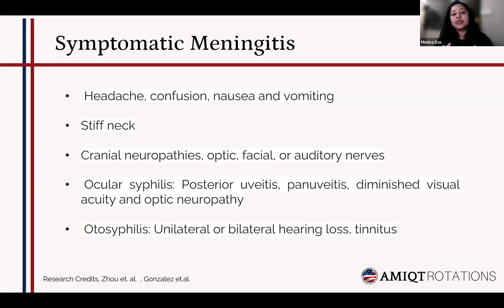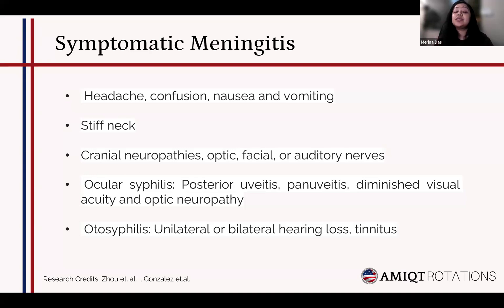Many HIV patients have presented with ocular syphilis. Ocular syphilis manifests as uveitis — mostly posterior uveitis and pan-uveitis — and the diagnosis can be tricky. It also causes interstitial keratitis, diminished visual acuity, optic neuropathy, and retinal detachment, potentially causing loss of vision. Otosyphilis similarly manifests as unilateral or bilateral hearing loss, particularly high-frequency hearing loss, along with tinnitus. Patients should be referred to ophthalmology and ENT specialists, keeping suspicion of neurosyphilis in mind if they have a relevant history.